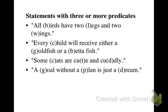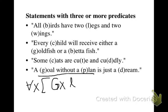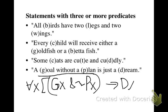Now we have another universal statement with three predicates, but this time we have a complex subject. For every x, if x is a goal but it doesn't have a plan, then it's just a dream. Rather than having two predicates in the consequent of the conditional, they're in the subject — because one predicate, 'without a plan,' modifies the other predicate, 'the goal.'